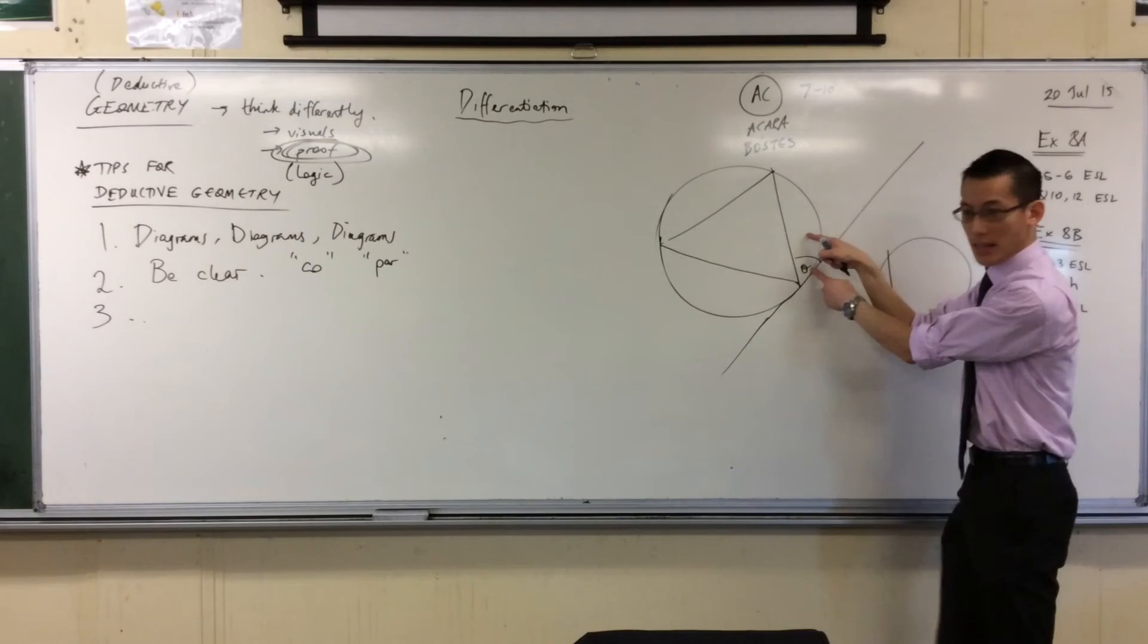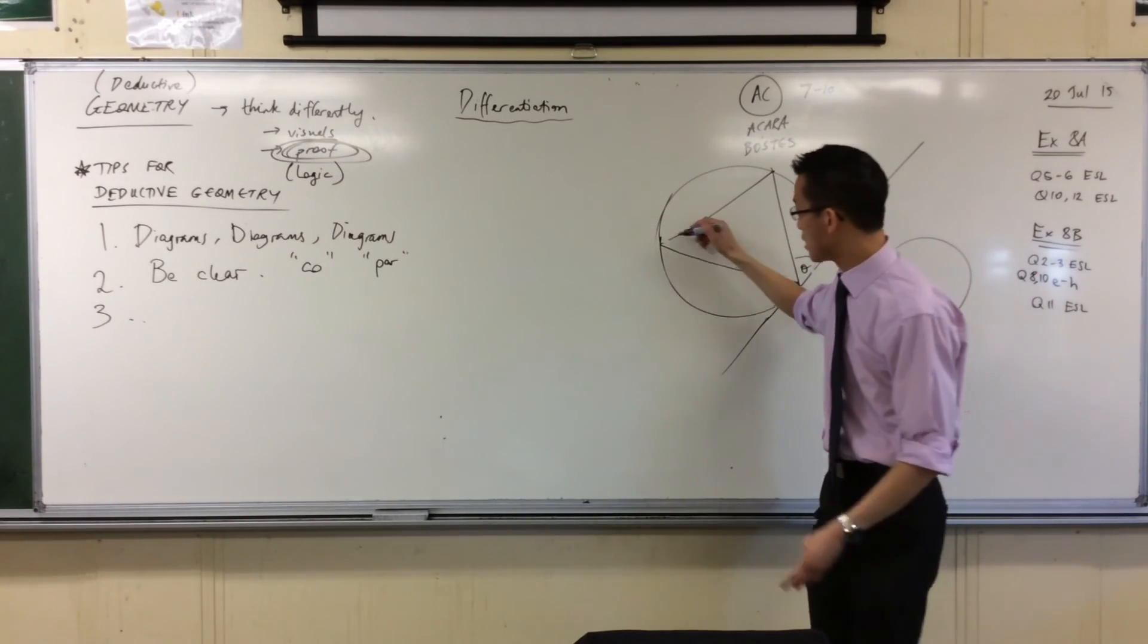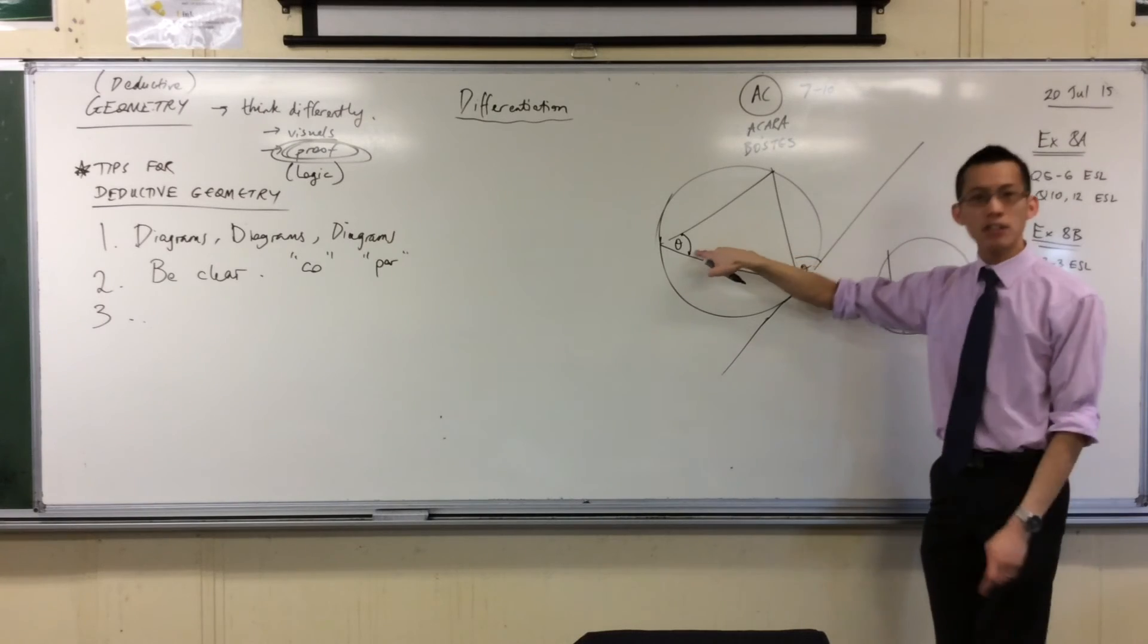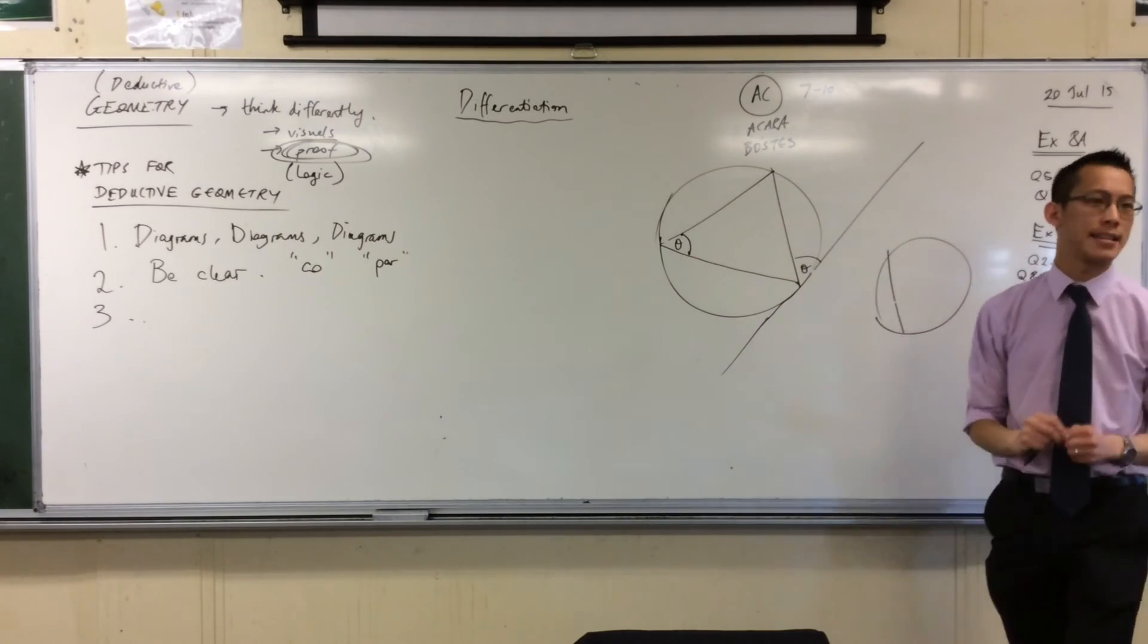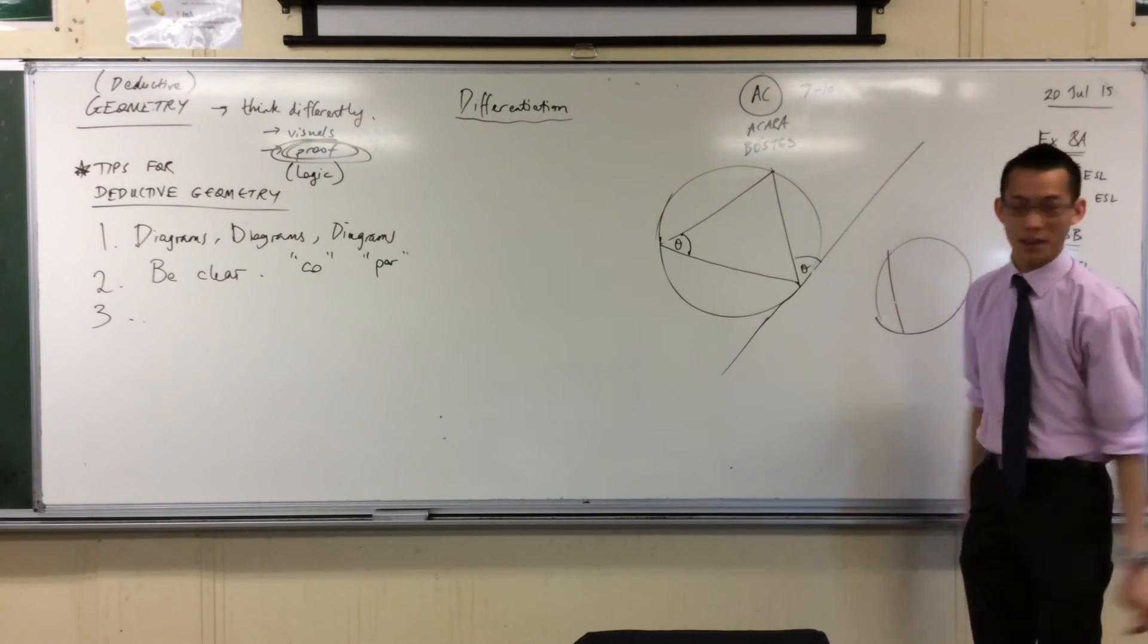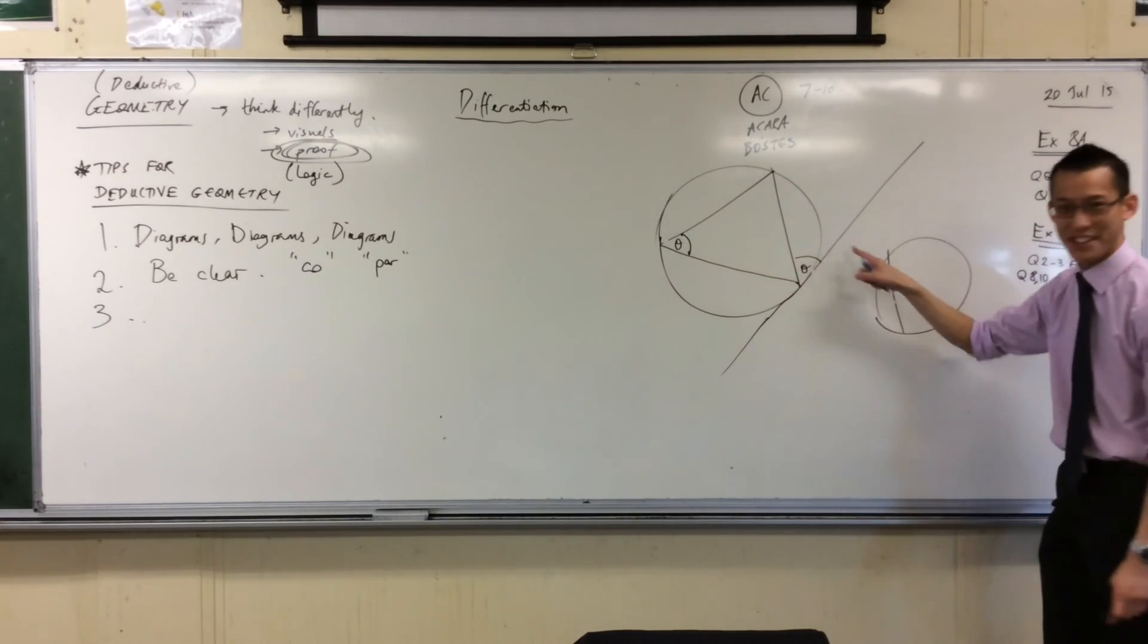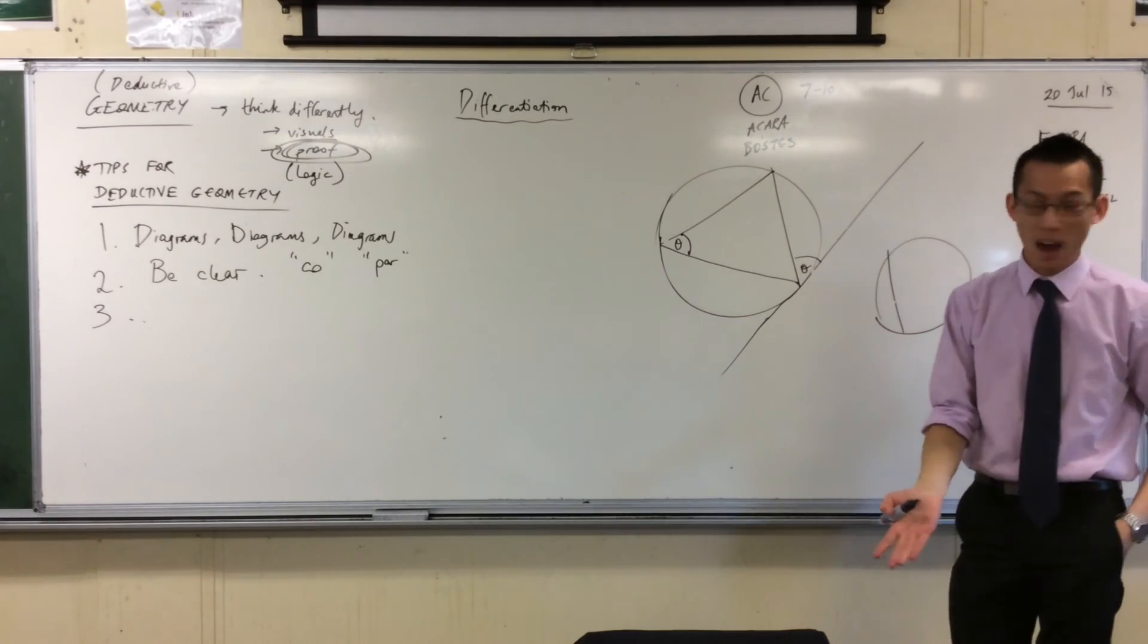So here's an angle over here and there's another angle over here in this segment, not the one that this thing goes in, in the other one. When I want to say the other one, my technical word for that is 'alternate.' That's the alternate segment. The angle in the alternate segment is equal to the angle between the tangent and the chord that made that segment. That's called the alternate segment theorem.